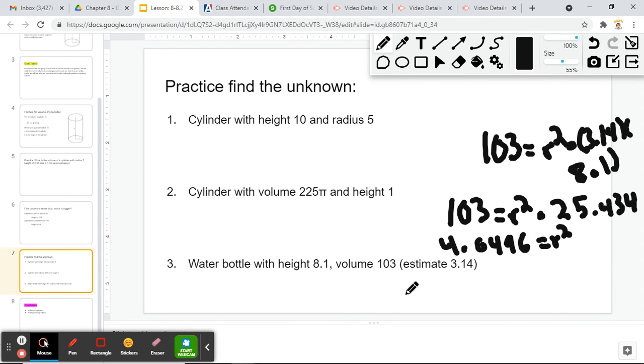Then we take the square root of both sides. So we'll do the square root of 4.04, and that gives us approximately 2. So the radius here equals 2.